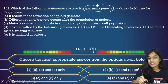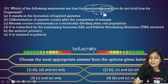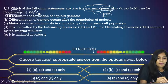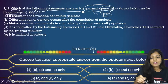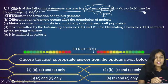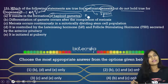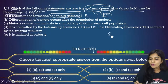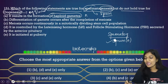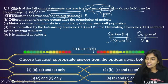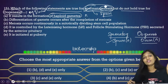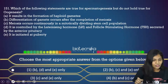Spermatogenesis means sperm formation or production of sperms; oogenesis means production of egg or ovum. The question asks which statement is true for spermatogenesis but NOT true for oogenesis. Option A: 'It results in the formation of haploid gametes.' In spermatogenesis, sperm is haploid; in oogenesis, ovum is also haploid. Since both are true for each, we cannot choose this option — we use elimination method.